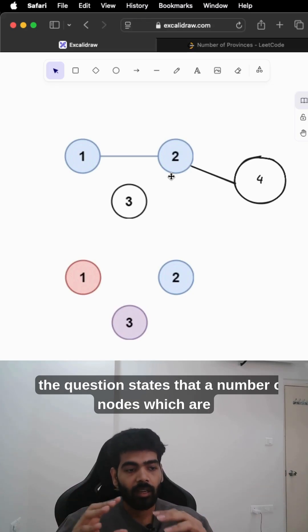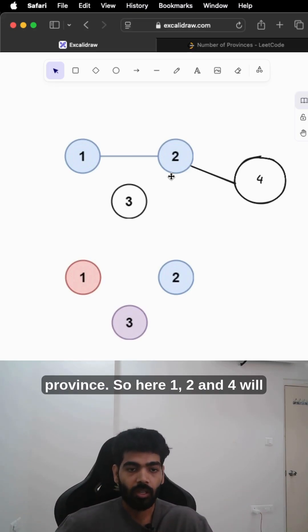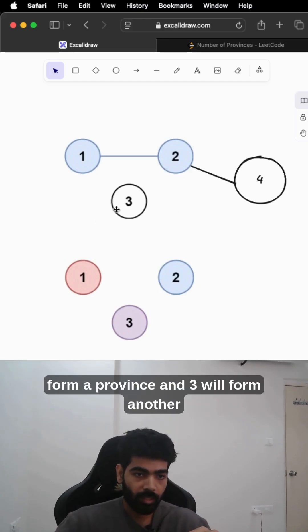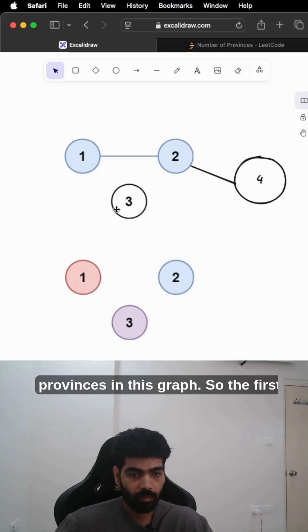The question states that nodes which are directly or indirectly connected form a province. Here, one, two, and four form a province, and three forms another province. We need to find the number of provinces in this graph.